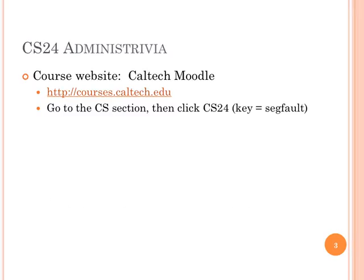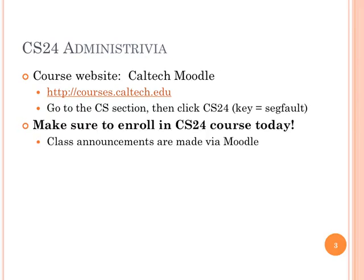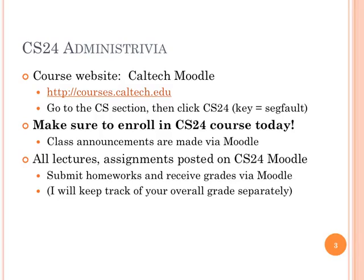The course website — we run everything on Moodle in this class. You should get on there, especially if you're bored already. Get on there right now and enroll. The enrollment key is 'segfault,' a word that you'll become very familiar with by the end of the term. I write code that segfaults — I had a segfault last week, so you just get used to it. Make sure that you enroll because that's how I do all my announcements, that's where assignments are made available, and that's where lecture slides are made available.